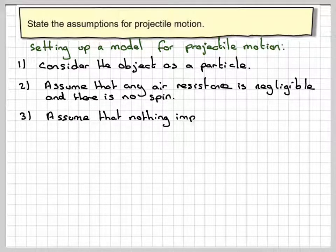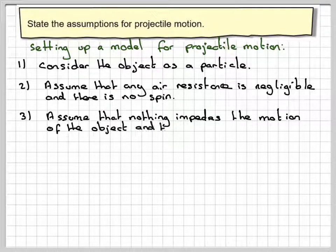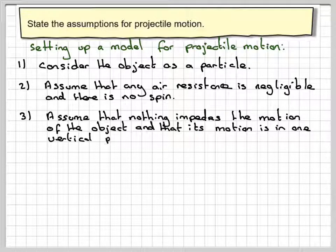3. Assume that nothing impedes the motion of the object and that its motion is in a vertical plane.